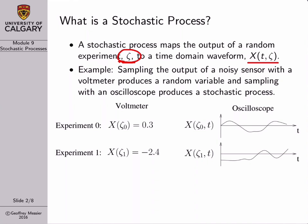The best way to get a more practical understanding is with an example. When we first discussed a continuous random variable, the example I gave was sampling the output of a noisy sensor — sampling the voltage at the output of a noisy sensor with a voltmeter. In our first experiment, our random variable mapped the outcome of our experiment to a voltage value of 0.3. For the second trial, we repeated the experiment and captured minus 2.4 volts.